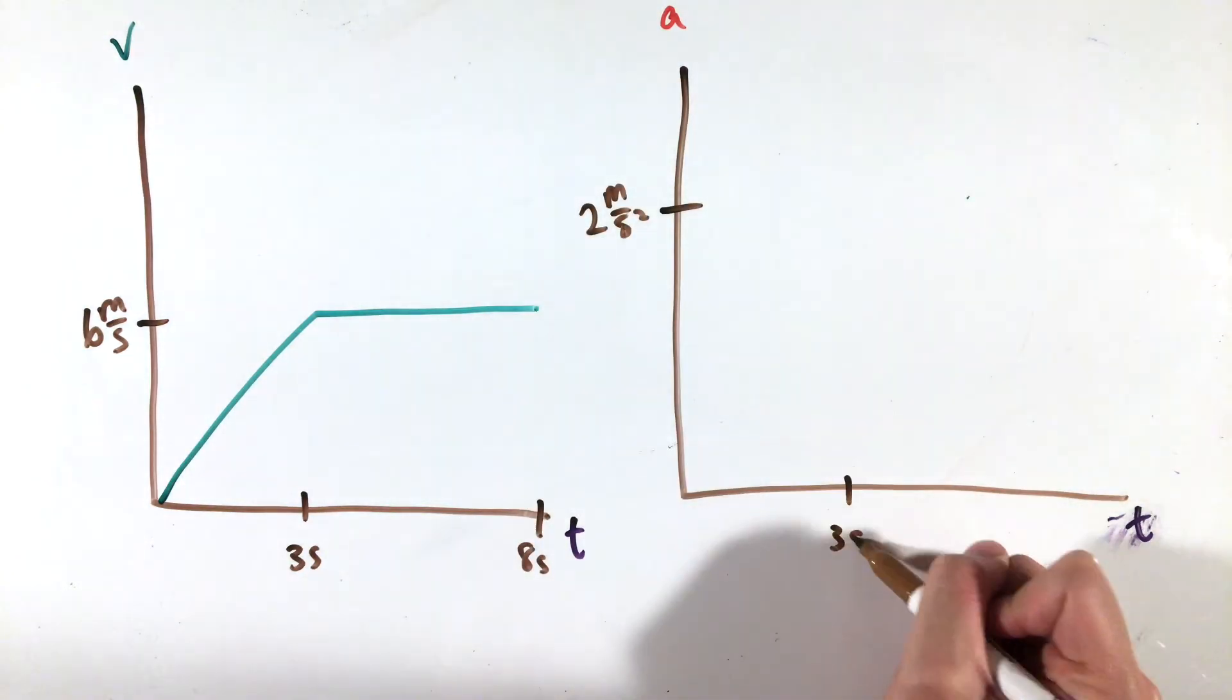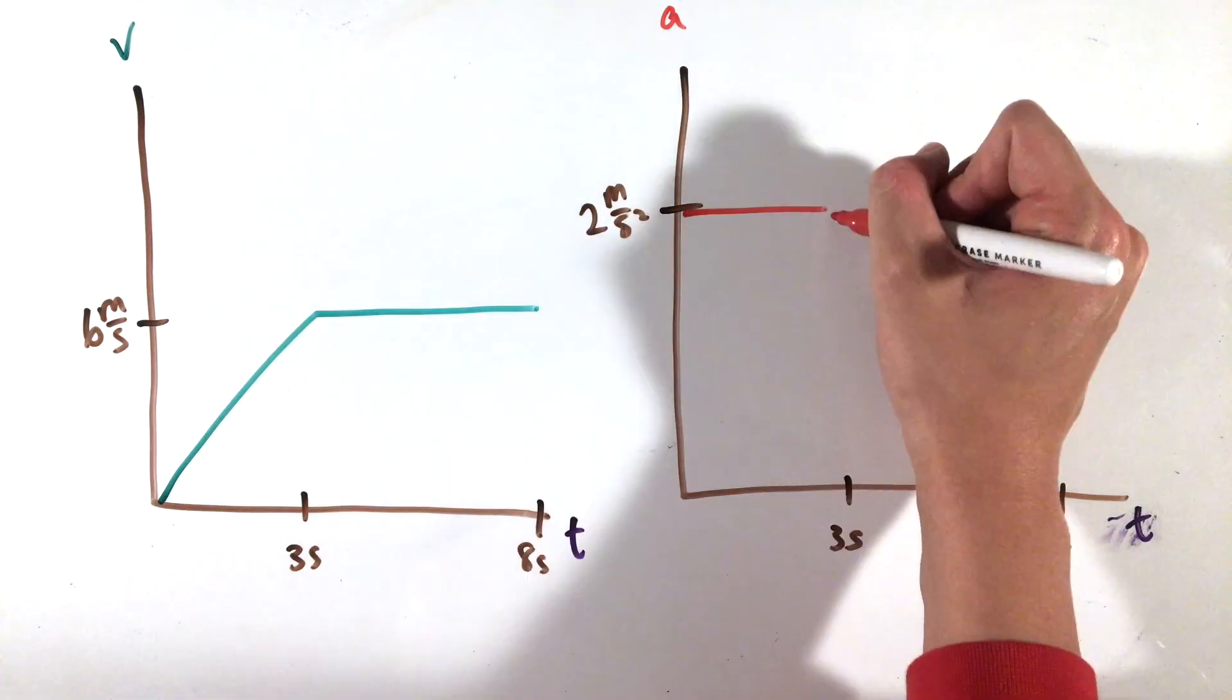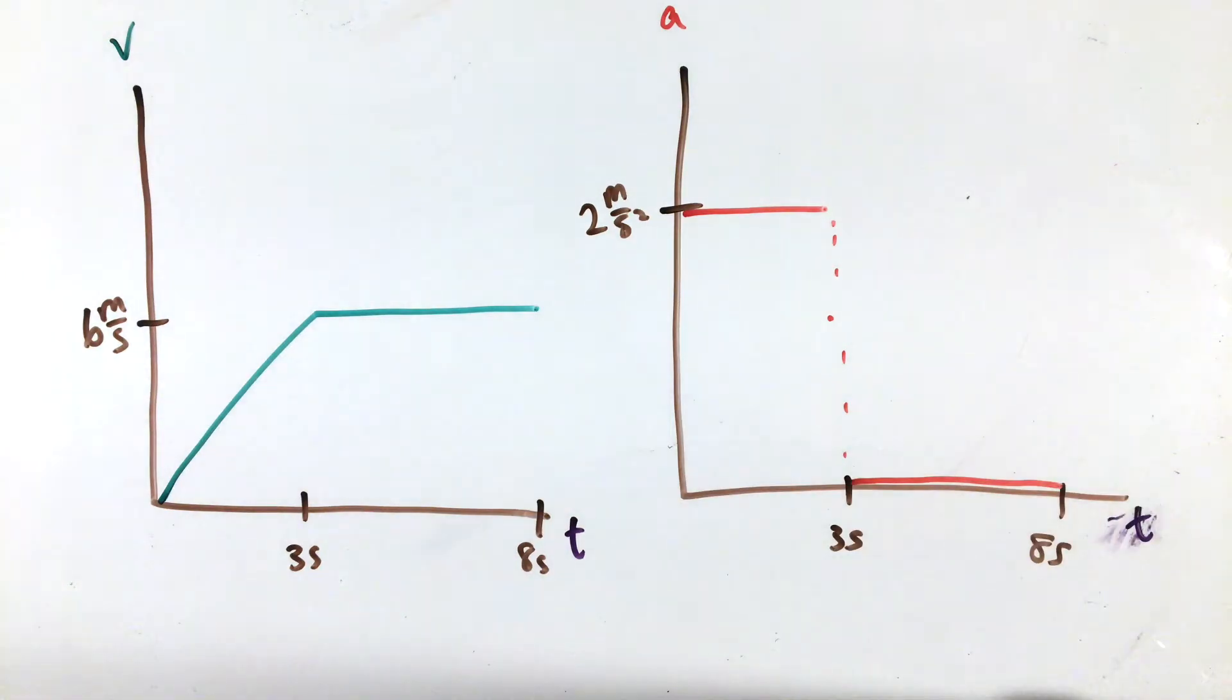Now, the reason this slope rule works in the first place comes from our basic kinematic definition. Acceleration is the rate of change of velocity. Even looking at the units of a velocity time graph, the rise over run or slope would be meters per second over seconds, which is an acceleration unit.